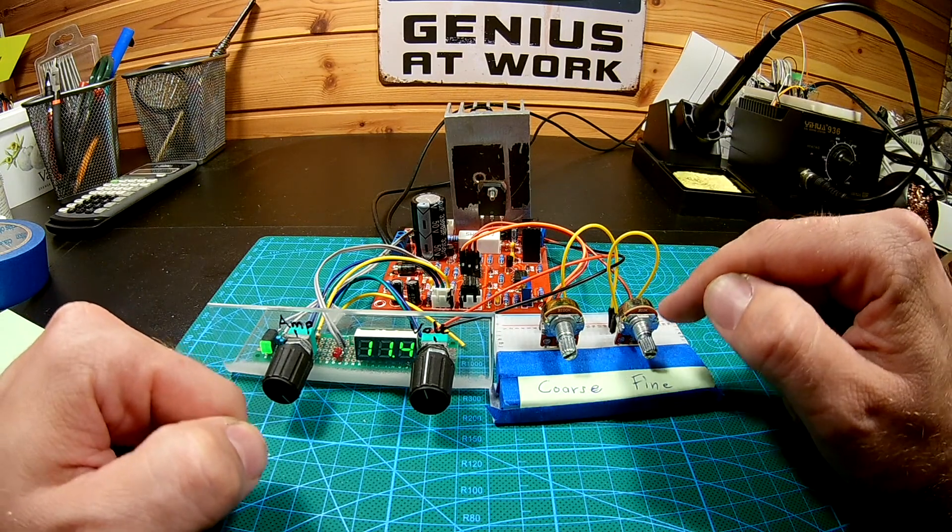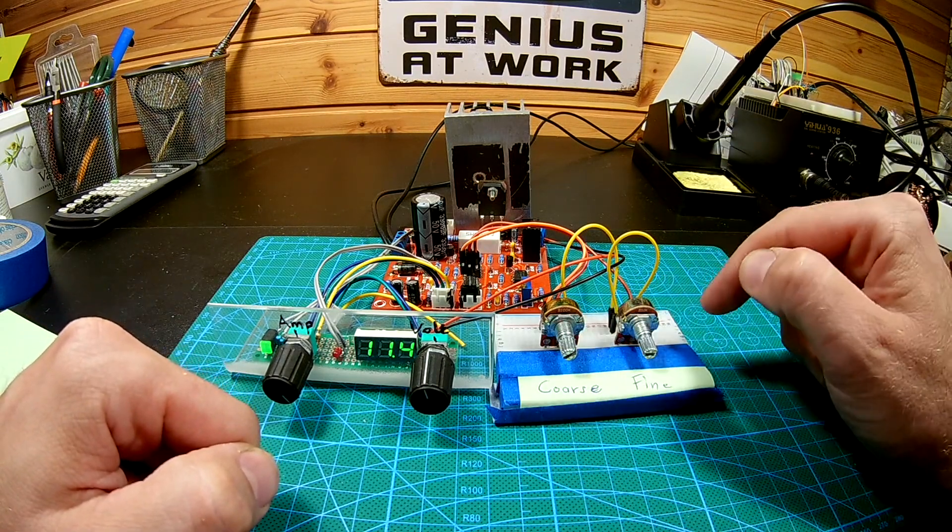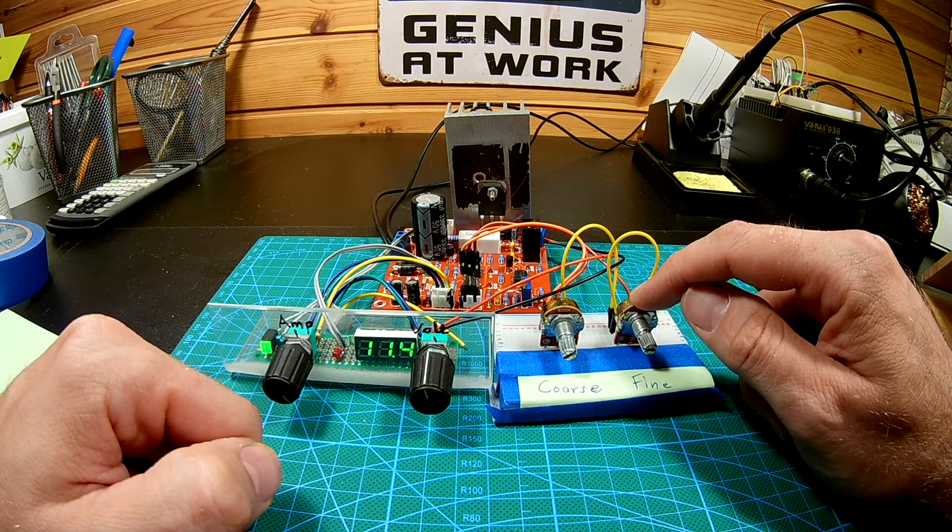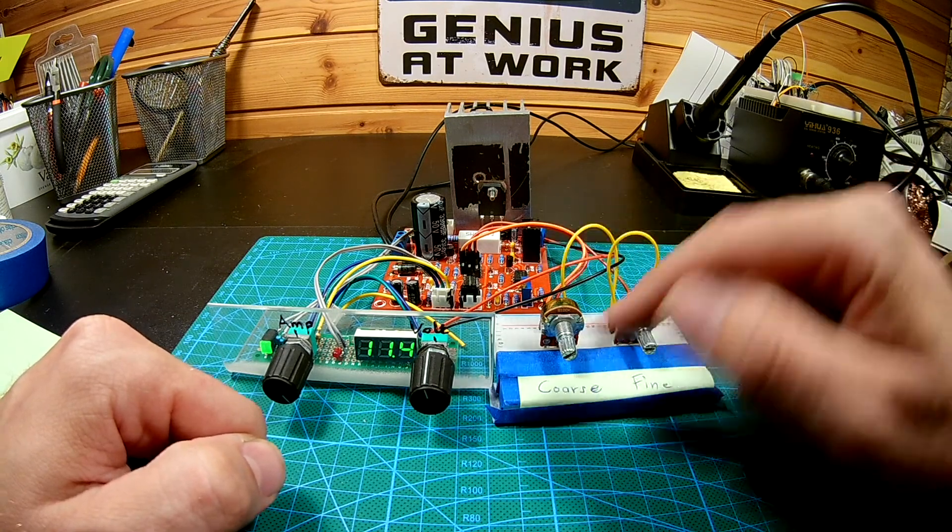But there's also my way which means you're gonna need to drill another hole. That's the two potentiometer setup, one coarse setting and one fine setting. And let's just first take a look at how it works.